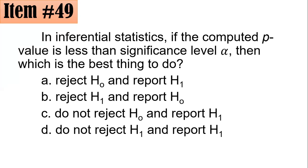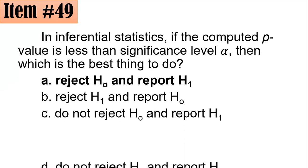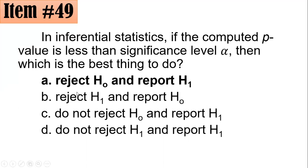Item 49. In inferential statistics, if the computed p-value is less than the significance level or your alpha, usually like 0.05 and so on, then which is the best thing to do? Which of A, B, C, or D is correct? That is, we have to remember this, that if the value of p is less than our alpha level, then there is sufficient evidence to reject the null hypothesis. H0, by the way, is a null hypothesis. And if you rejected the null hypothesis, you have to report the H1 or the alternative hypothesis. However, that's why the correct answer here is letter A. However, if the value of p is greater than your alpha, then do not reject the H0 and you have to report the H0.